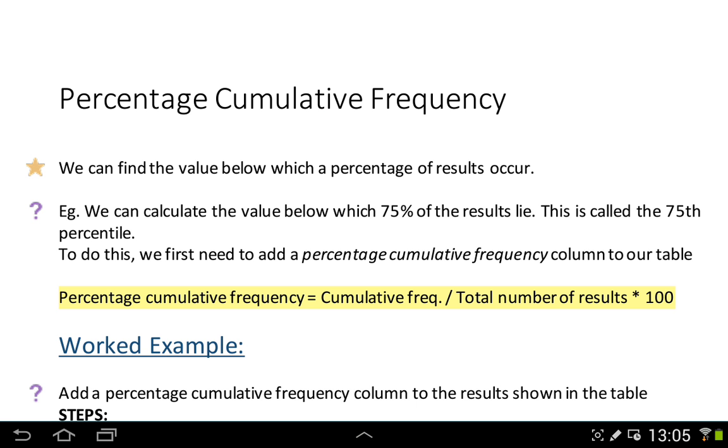We can find the value below which a percentage of results occur with this type of method. We can calculate the value below which 75% of the results lie. Did my math result for a particular test, is that result above 75% of the class or is it below? You can find where you sit in your class, for example. This would be called the 75th percentile.